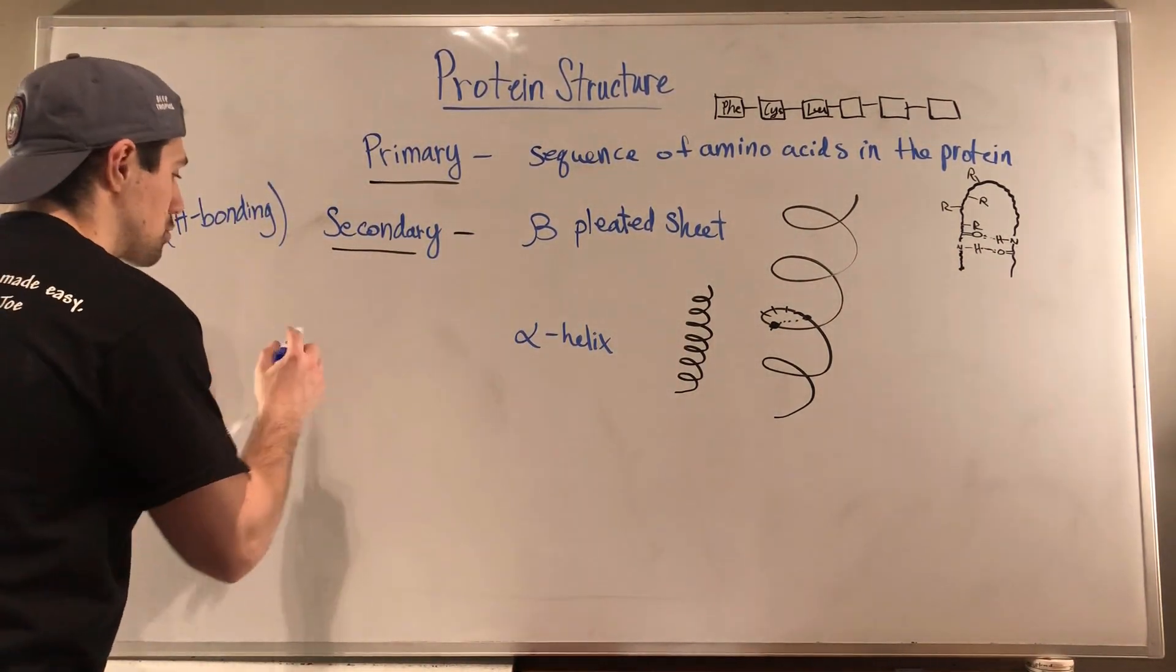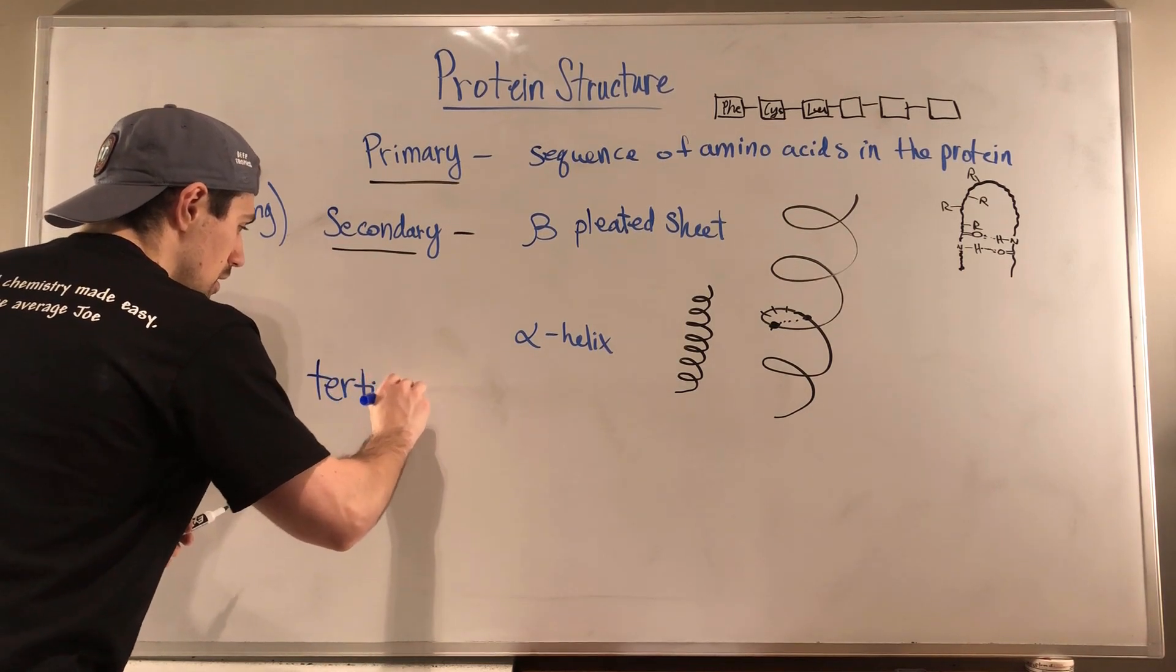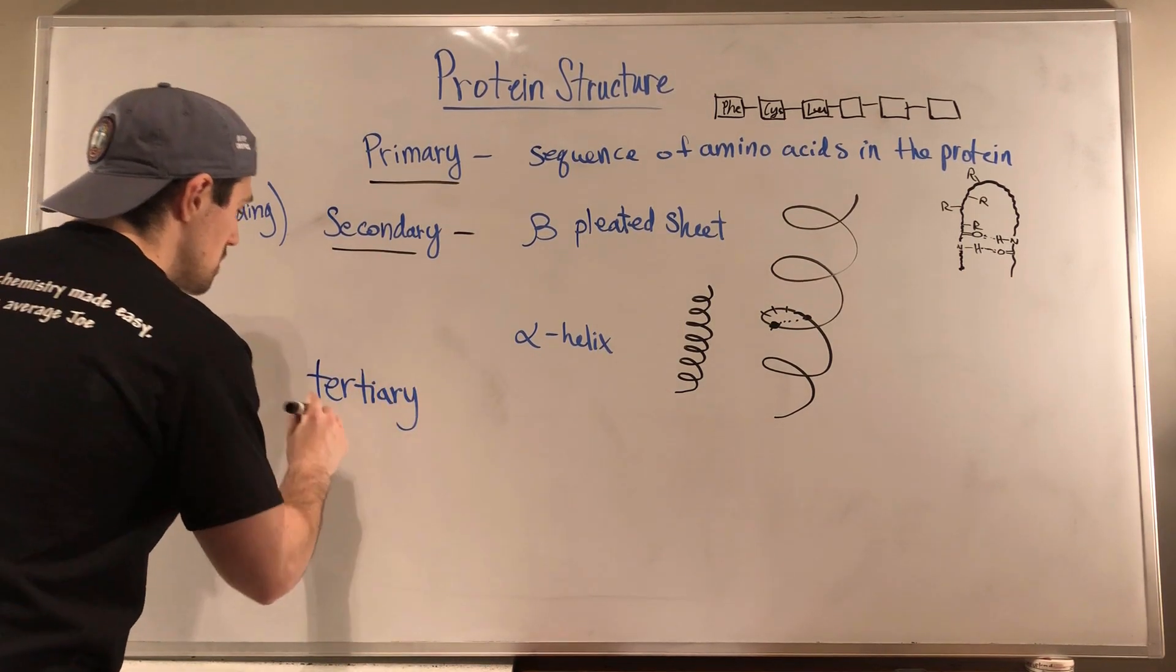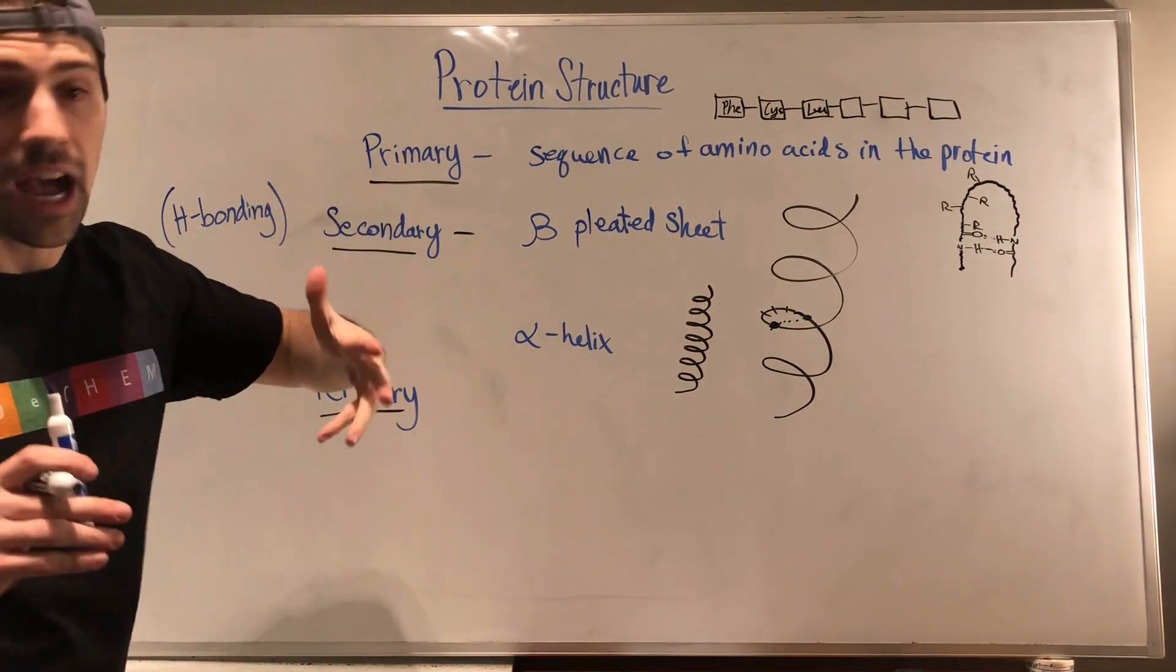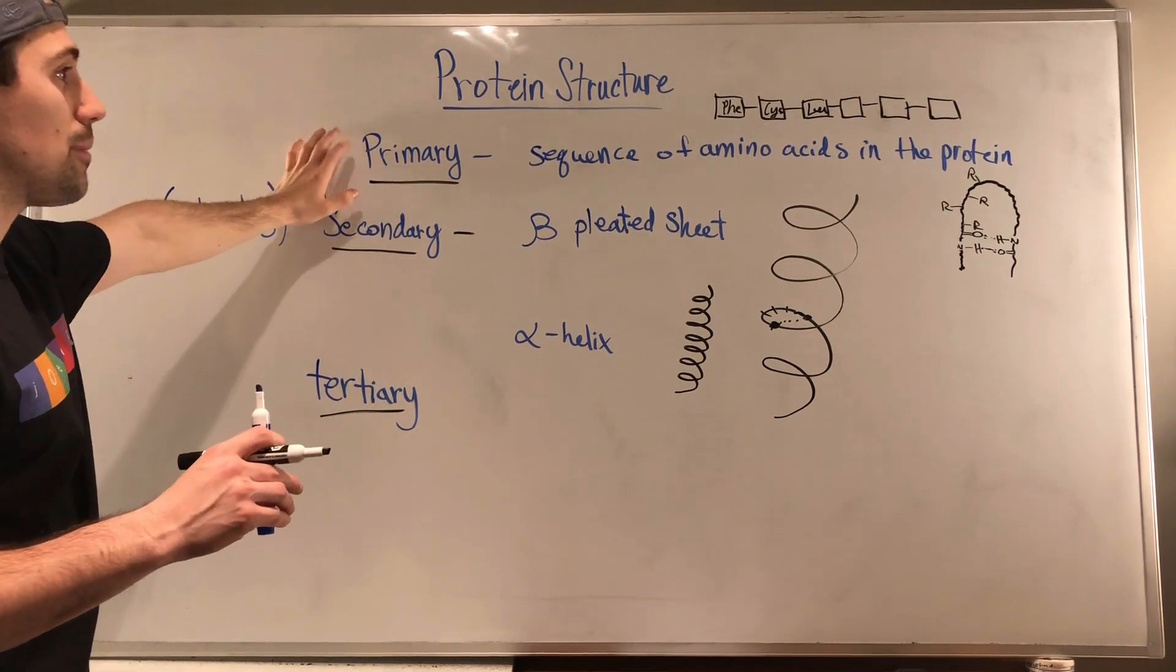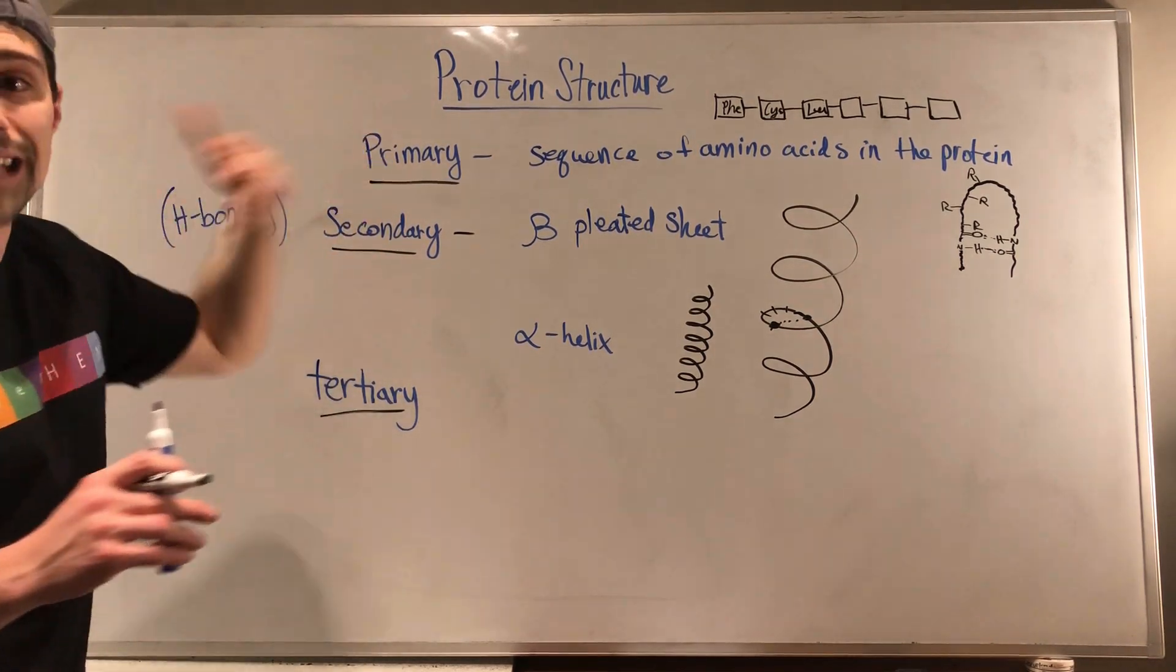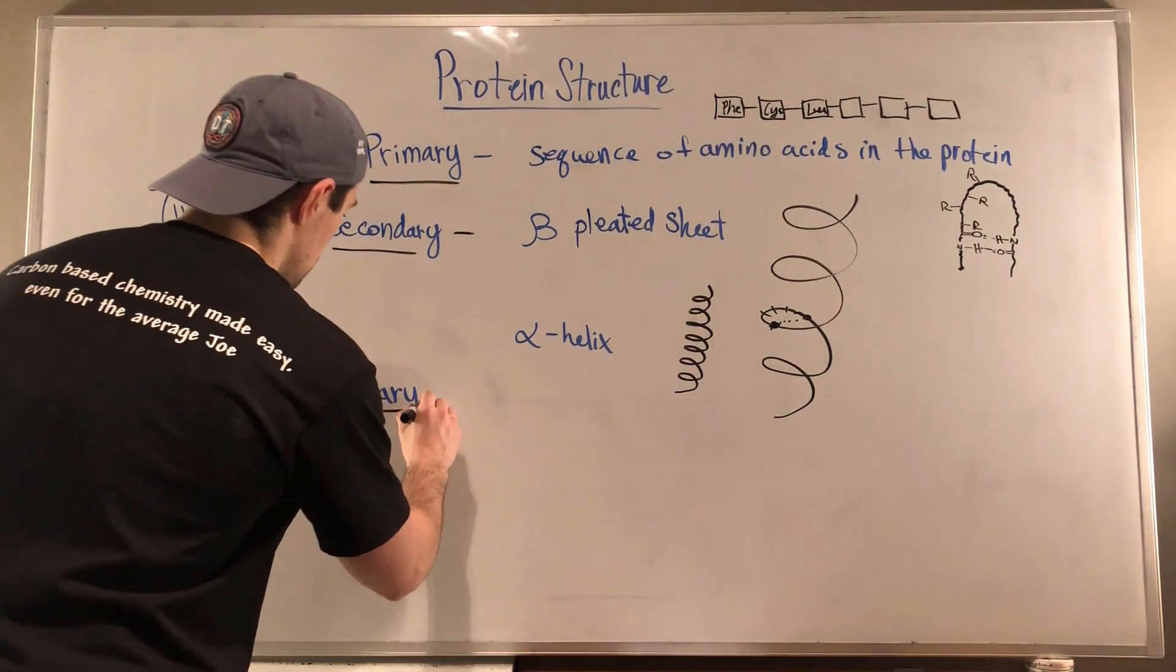So tertiary structure. Okay. So tertiary structure is, so smaller peptides, tripeptides, tetrapeptides, blah blah blah. They can have primary structure. You start to get longer, you get secondary structure. When you have a full blown protein, you get tertiary structure.